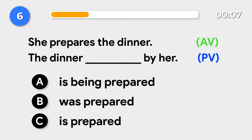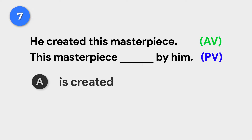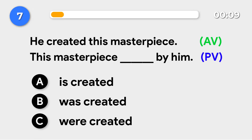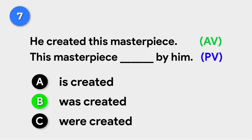She prepares the dinner. → The dinner is prepared by her. He created this masterpiece. → This masterpiece was created by him.